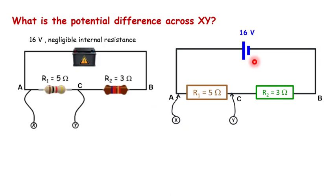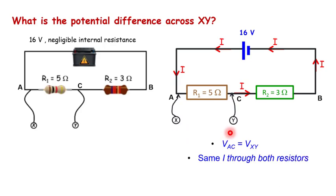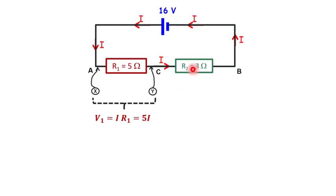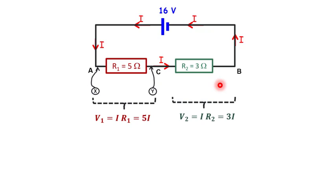We have a 16-volt cell in series with a 5-ohm resistor and a 3-ohm resistor. We note that the potential difference across AC is the same as the potential difference across XY, and the same current flows through both resistors. The PD across R1 is 5I and across R2 is 3I. Since the same current I flows through both, 16 volts is divided in the ratio of 5:3, which is the ratio of R1 to R2 — our familiar potential divider principle.